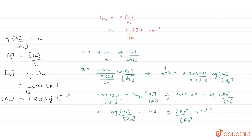The concentration of A left after 240 minutes is 6.25% of A₀. That is the answer to this question. I hope you guys understood how we solved this. Thank you.